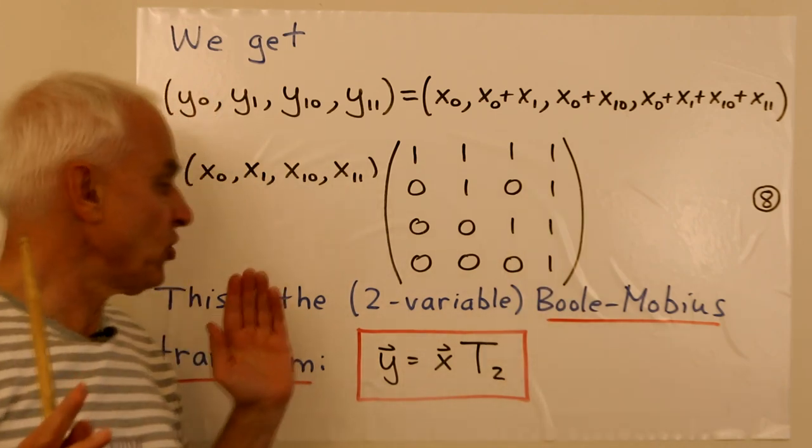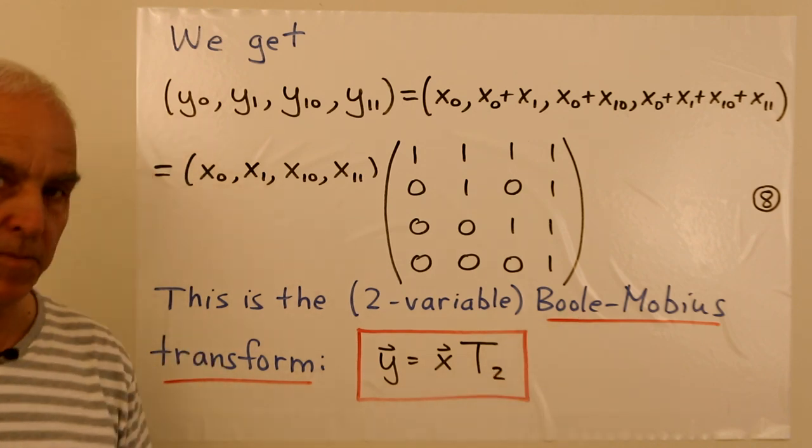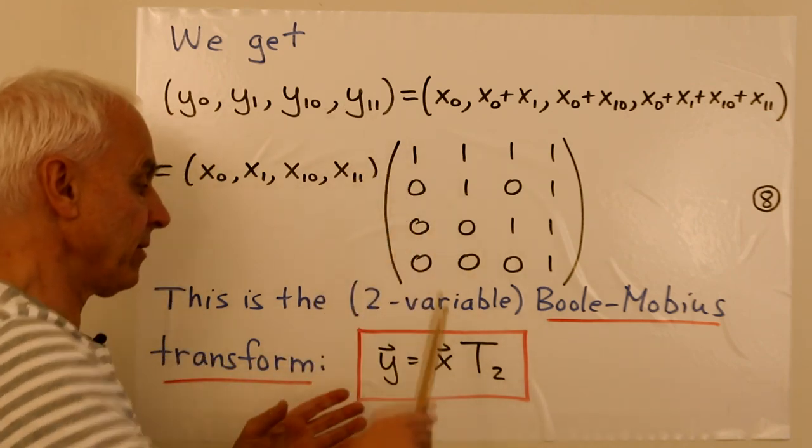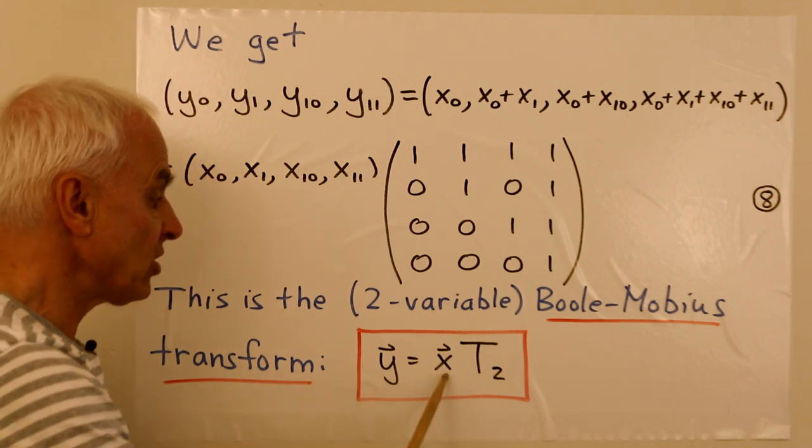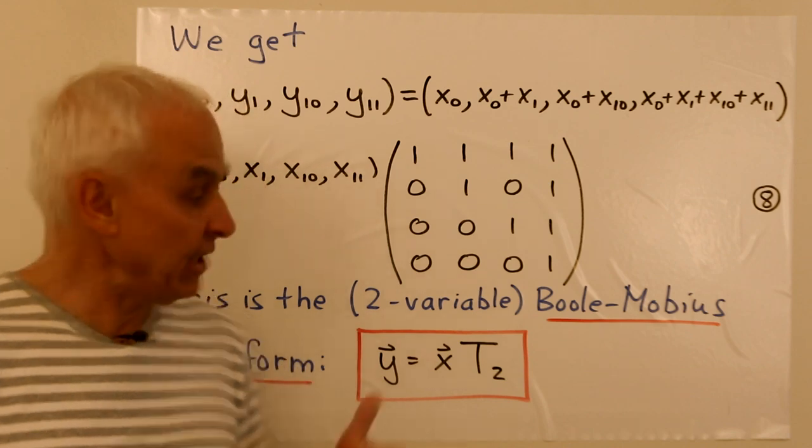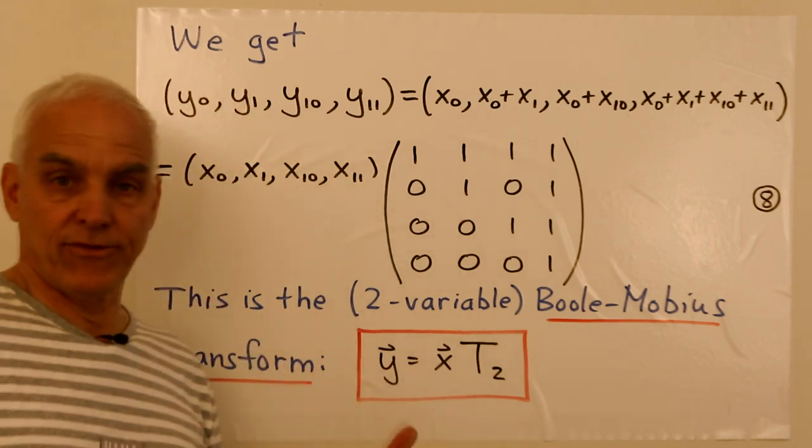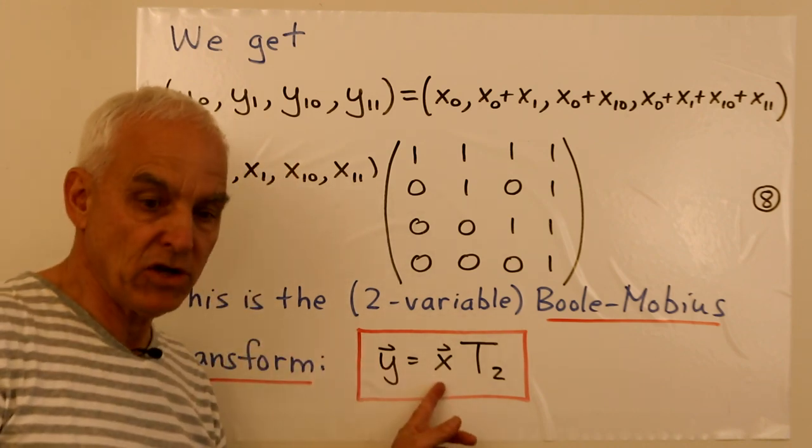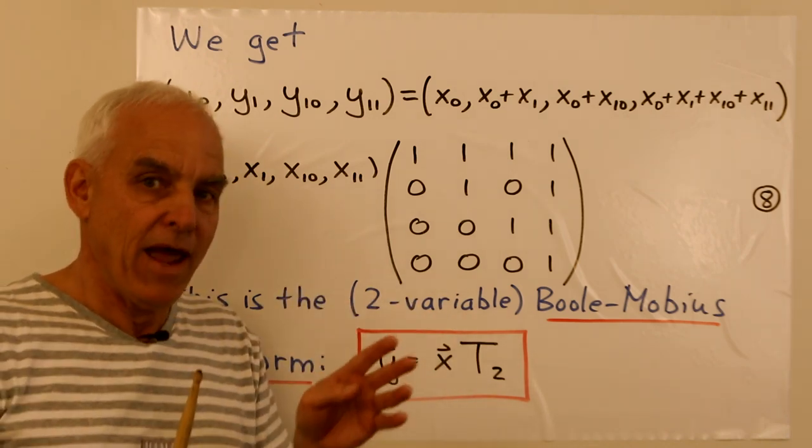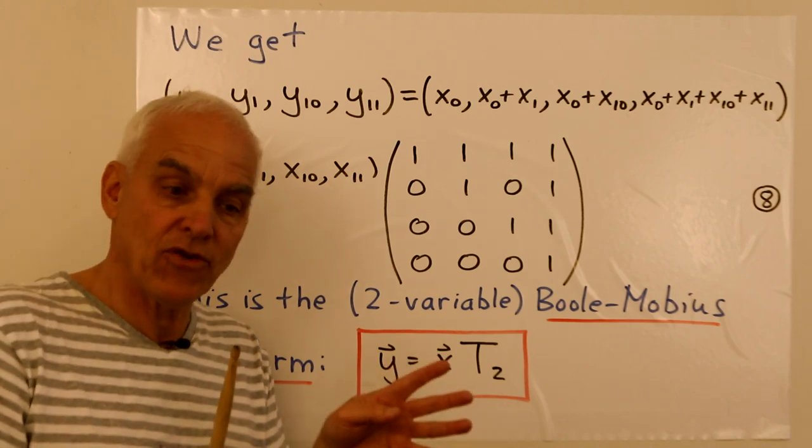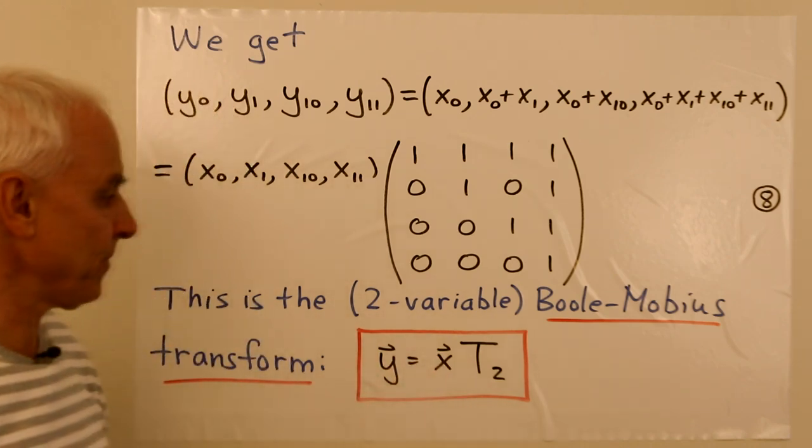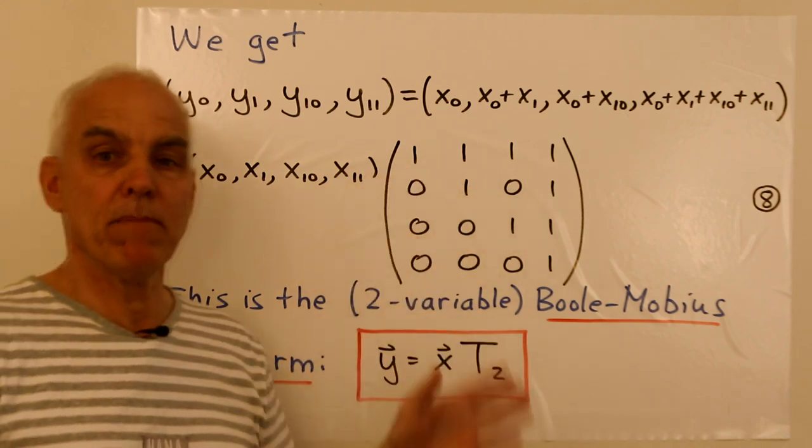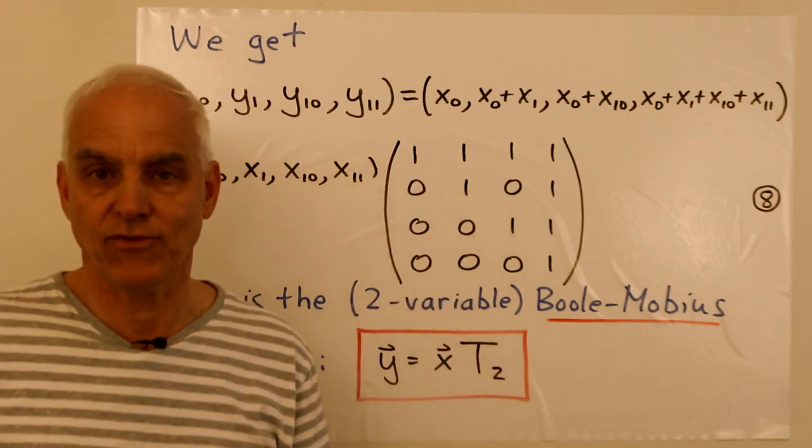So this is then the two variable Boole-Mobius-Transform. Taking the starting vector x and giving the vector y. And the effect is that y is x times T2, where T2 is this matrix. T for transform, 2 for two variables. So what's this telling us? It's telling us how to go from a Boolean function. x are the entries of a general Boolean function. And the y's are the entries, or the coefficients, of the corresponding Boole polynumber. And this is how we go from the Boolean function to the Boole polynumber. In this case, we just apply a matrix to a little vector of coefficients or entries.